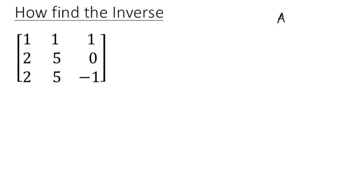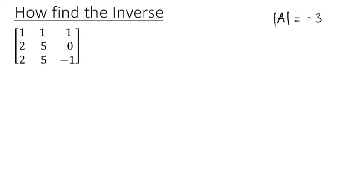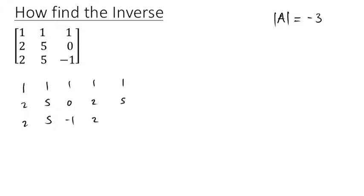Now that we have our determinant, let's write it here. The determinant of A is simply minus three. Now I'll rewrite the matrix as it is: one, two, two, one, five, five, one, zero, minus one. I'd like to rewrite the first two columns. The first column is one, two, two, and the second column is one, five, five.